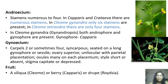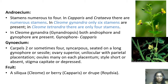Androecium: stamens are numerous to four. In Capparis and Cratevia there are numerous stamens. There is variation in stamen numbers — in Cleome gynandra, only six stamens are there; in Cleome tetrandra, the name itself tells you it has four stamens. Cleome gynandra has both androphore and gynophore — the androecium has a stalk and the gynoecium has a stalk, which is why they are called androphore and gynophore. In Marathi, that plant is called pandri tilwan, and the yellow-flowered plant is called piwali tilwan, very common in Maharashtra on wastelands.